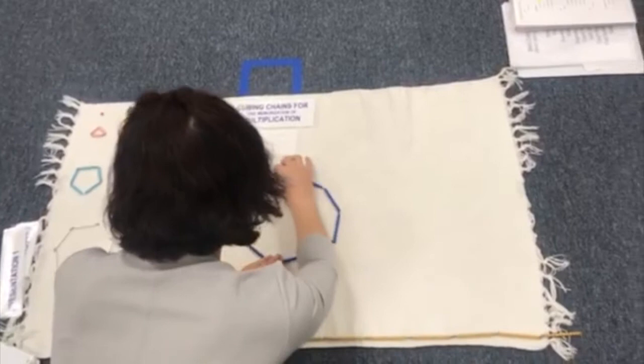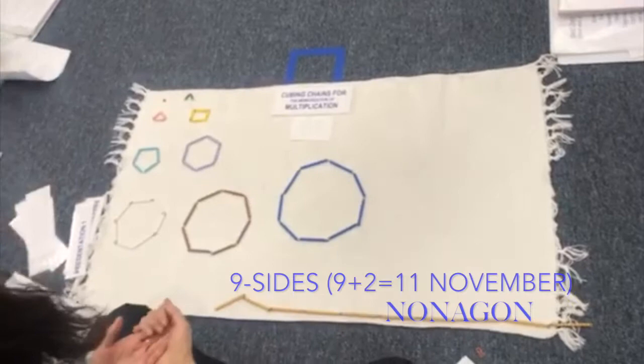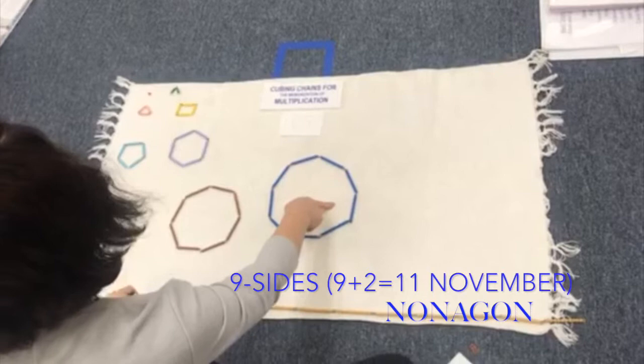Do you have a hard time to remember all these names? Yes. Okay, so I'll show you a trick. You plus two, so this one has nine sides, right? The plus two is 11. So 11th month is November. Starts as N-O. So it's nonagon.